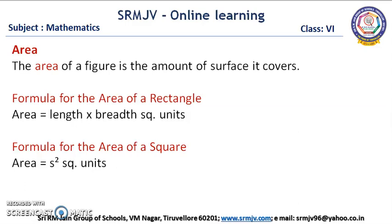Before that we have to know what is area. The area of a figure is the amount of surface it covers. Here we have formulas to find the area of the rectangle and the area of the square. Area of the rectangle is equal to length into breadth square units. Area of a square is equal to S squared square units, where S represents the side of the square — meaning we multiply side into side.